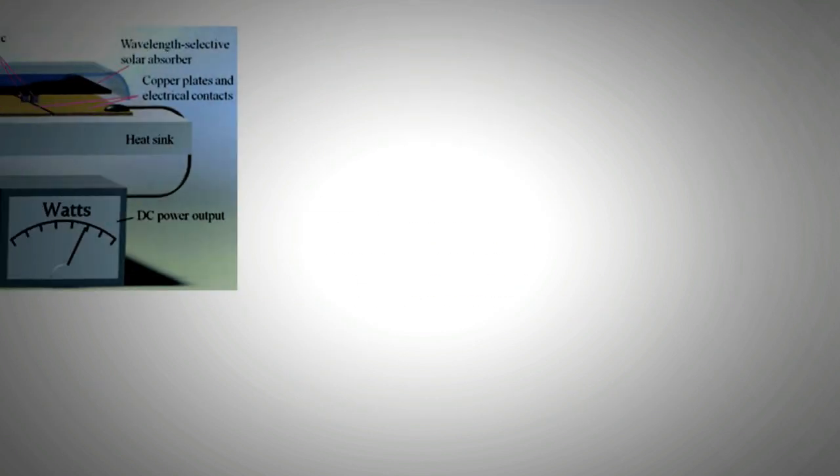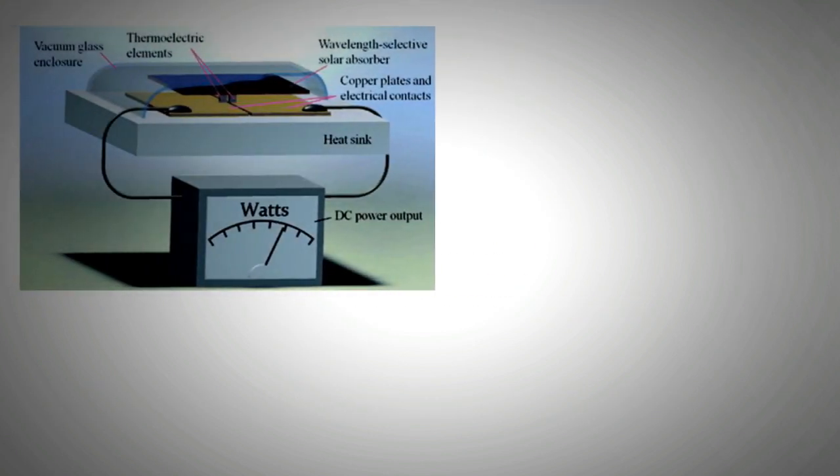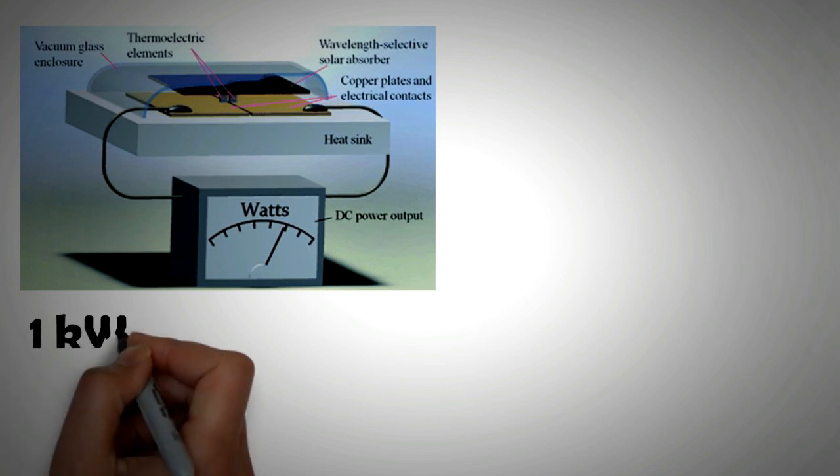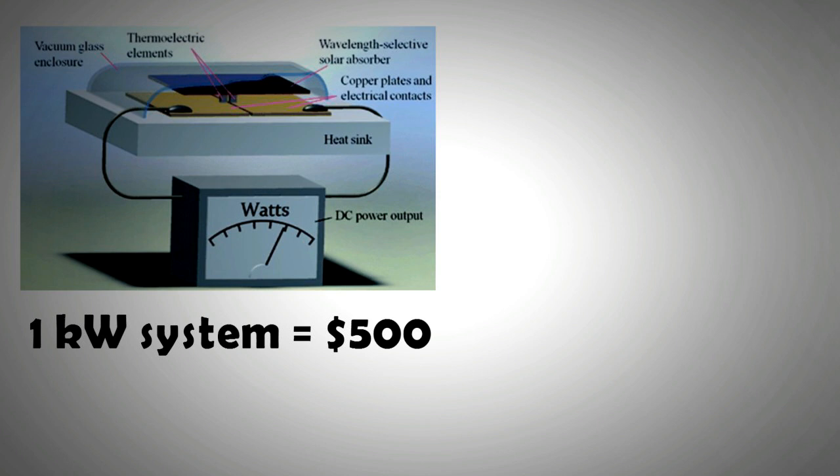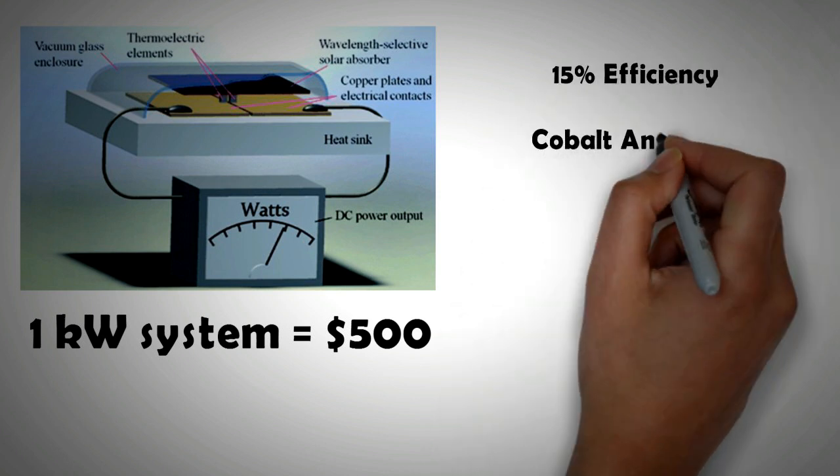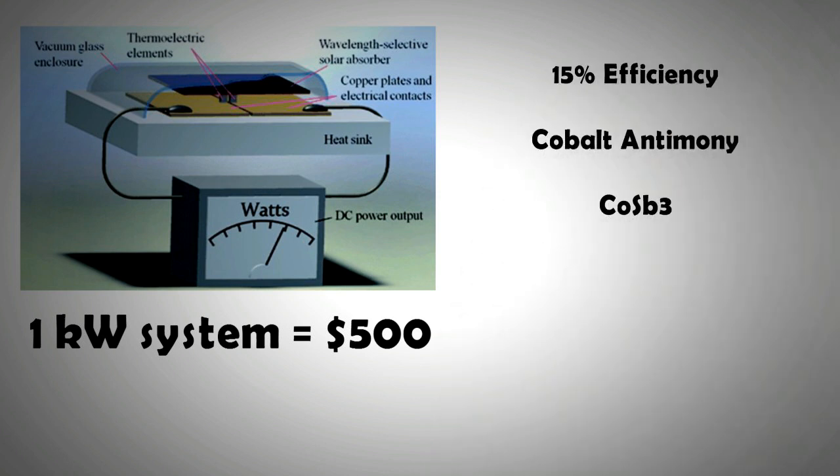For a domestic user, this means that a 1 kilowatt system would cost only 500 US dollars. Furthermore, the new generation of STEG materials have demonstrated efficiencies of nearly 15%, and these include the skutterite compounds such as polycrystalline cobalt antimonide or CoSb3.